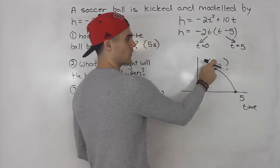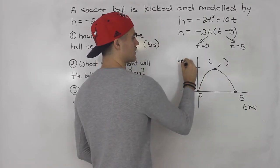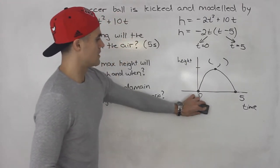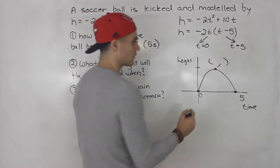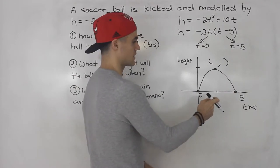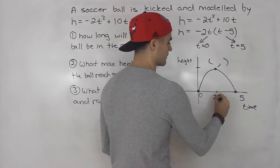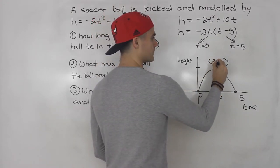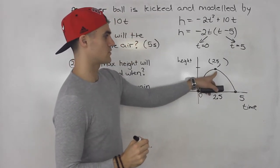So this value will give us when, this value will give us the actual height. I should have actually drew these titles beforehand. So notice that we could figure out when it's going to happen because it's going to be the midpoint between the intercepts. So 0 plus 5 divided by 2 gives us 2.5. So at 2.5 seconds,